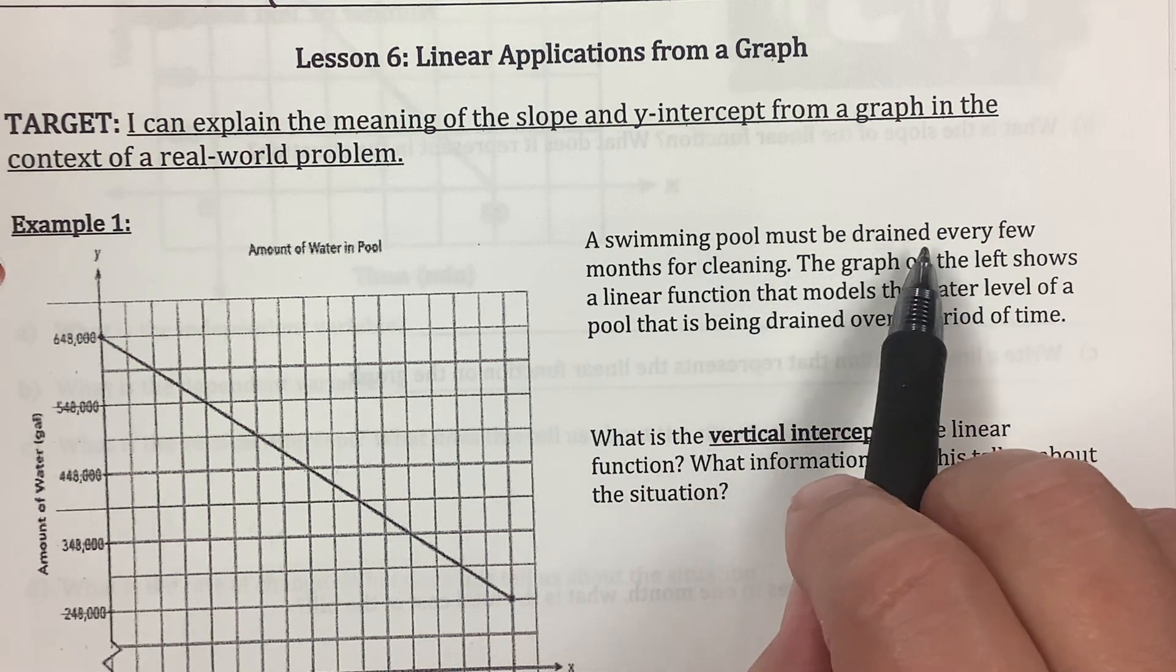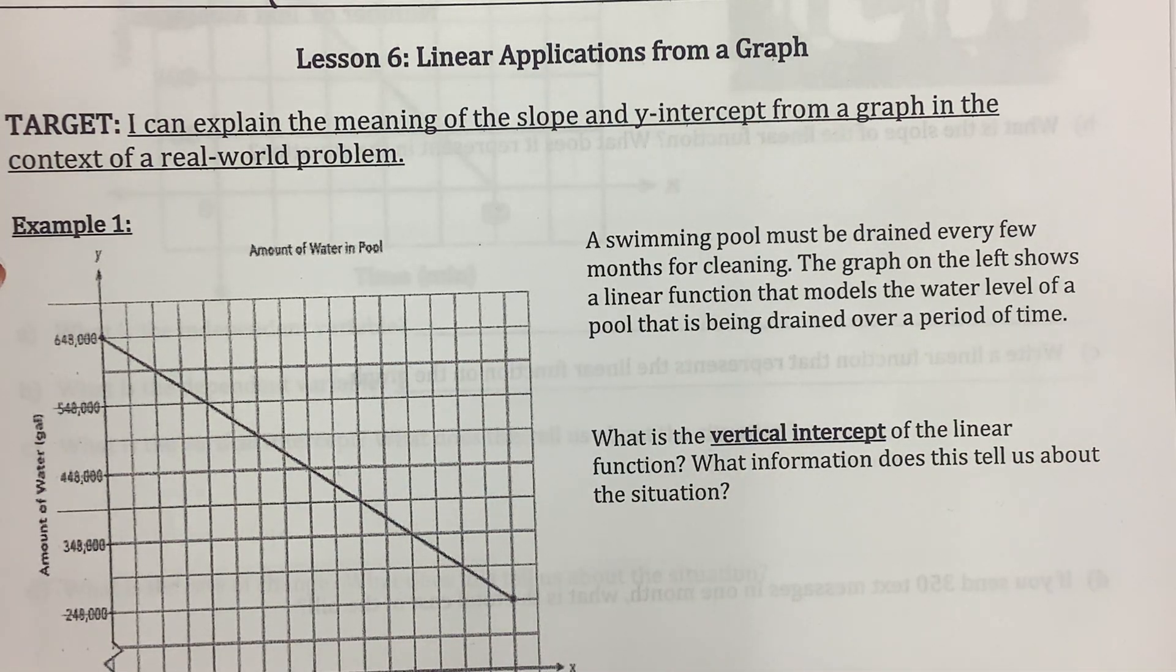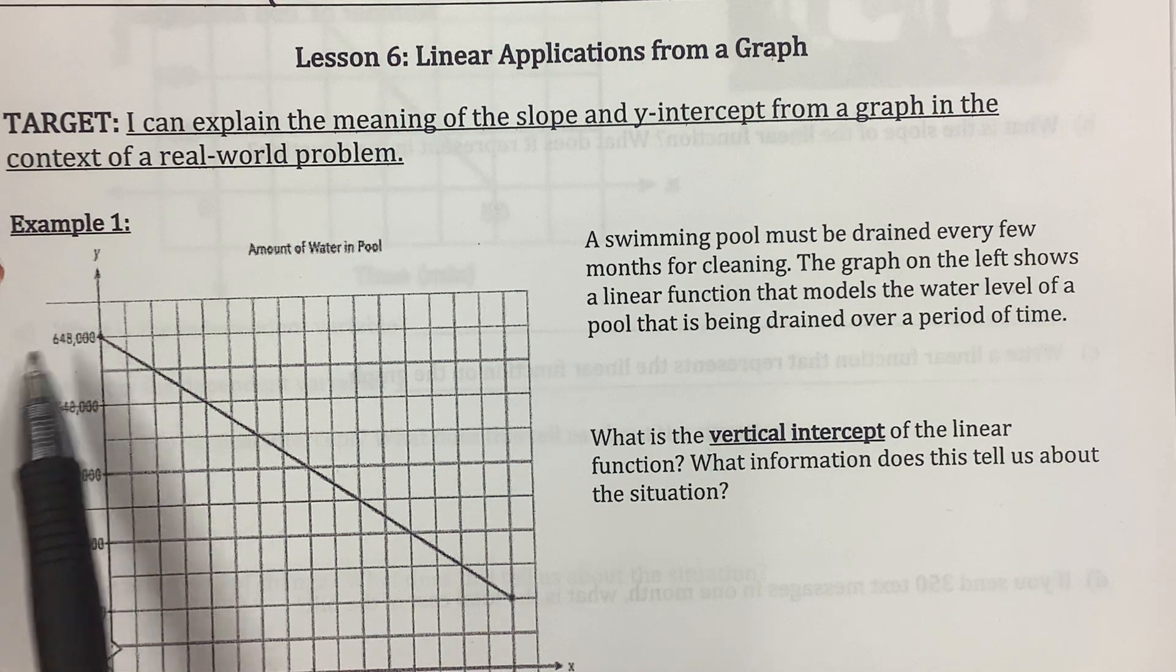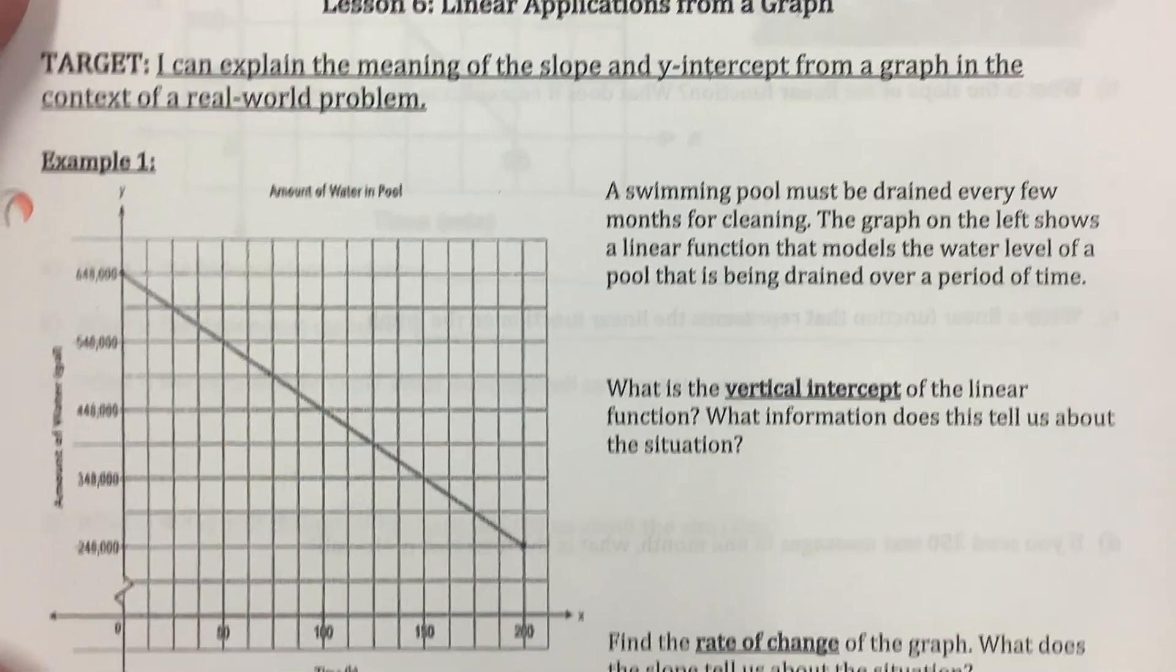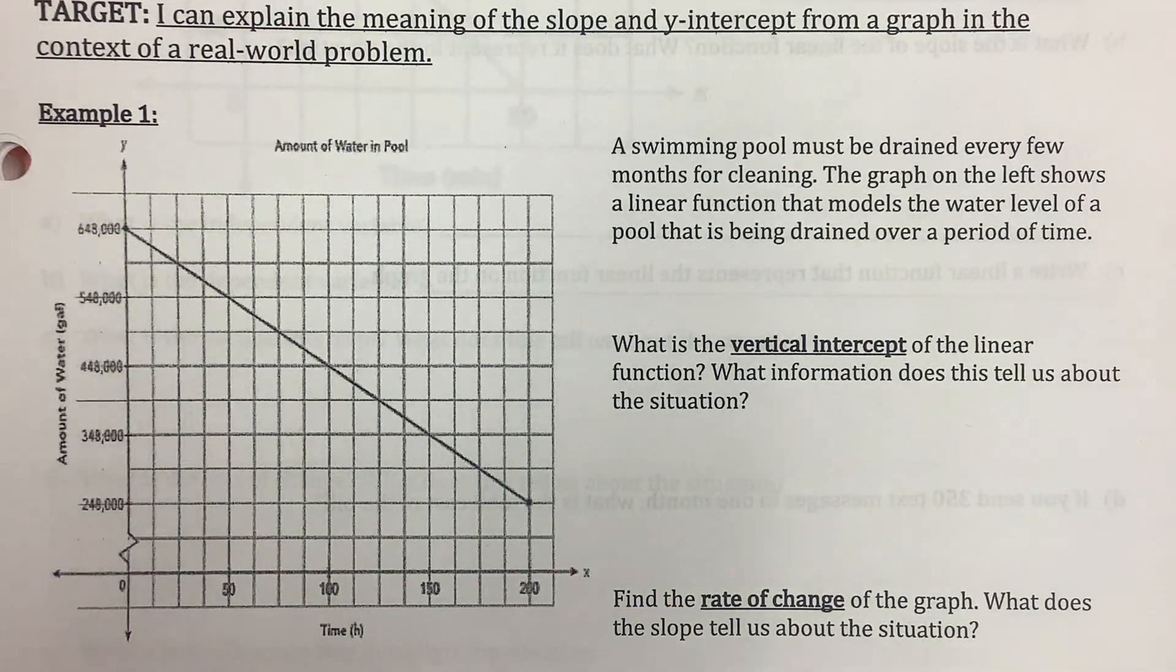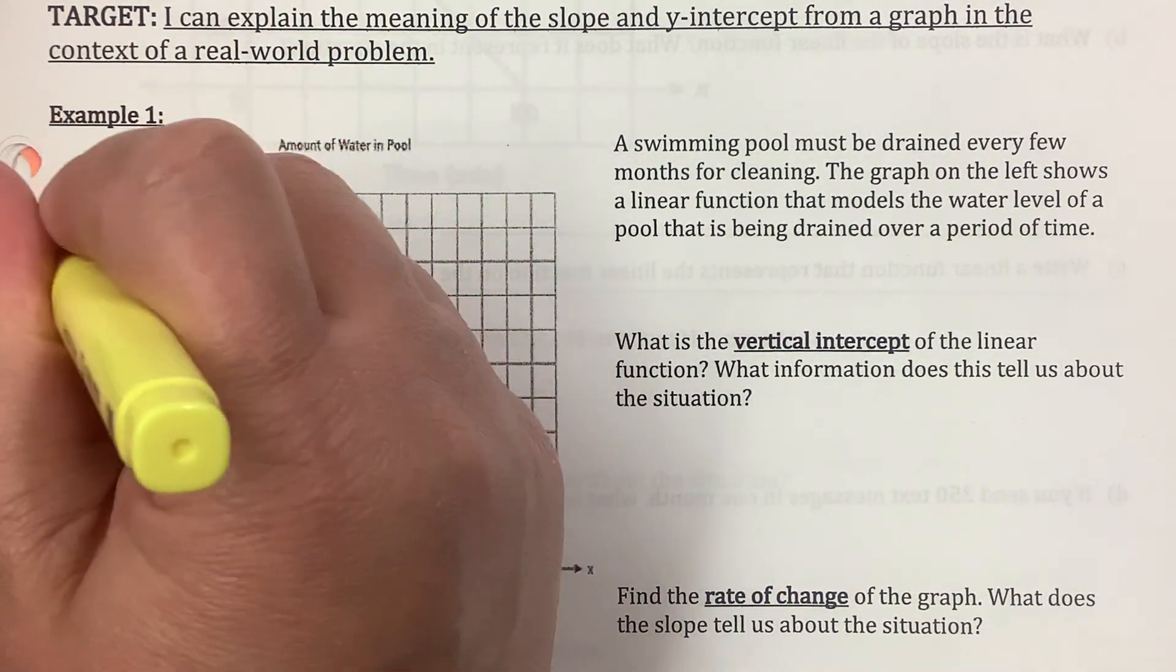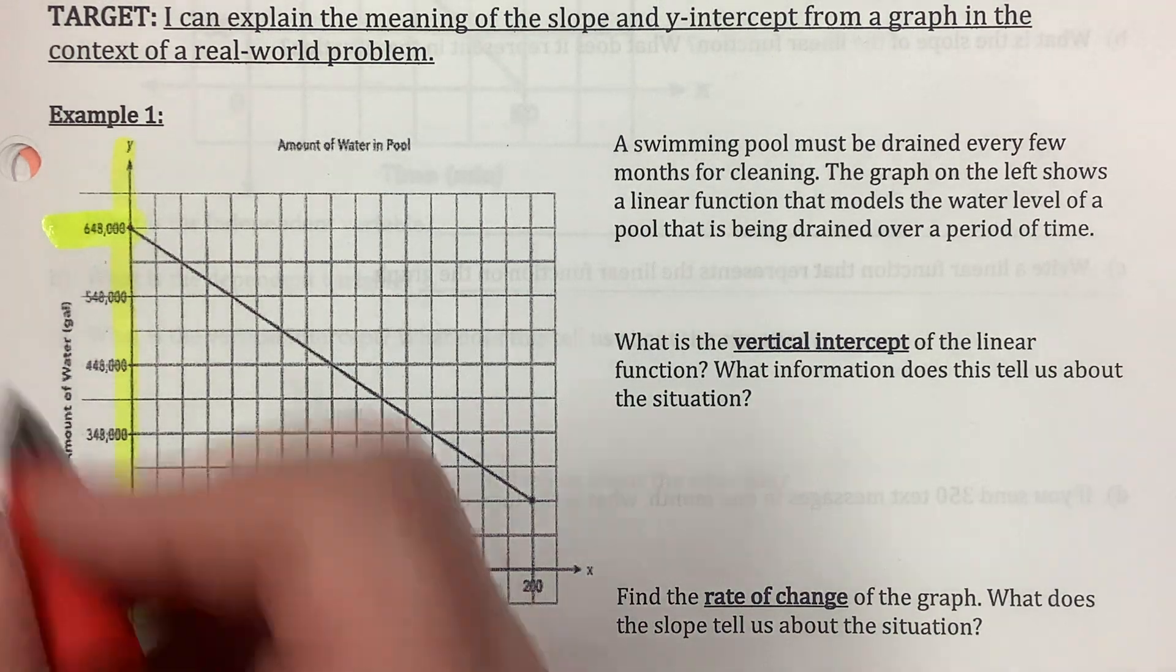A swimming pool must be drained. Does that mean putting more water in or taking water out? Well, looking at this very negative slope, I know it's going to be taking the water out. Every few months for cleaning, the graph on the left shows a linear function that models the water level of a pool that is being drained over a period of time.